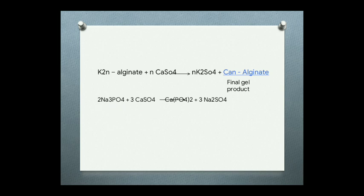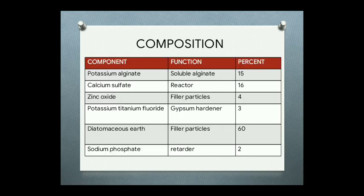In order to delay this reaction, a retarder is added. The retarder is trisodium phosphate, which combines with calcium sulphate to delay the reaction. So the first reaction that happens is with the retarder: calcium sulphate first reacts with the trisodium phosphate. After the trisodium phosphate is completely consumed, the remaining calcium sulphate reacts with the potassium alginate to form the final gel product. In this way the reaction is retarded.